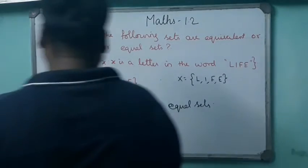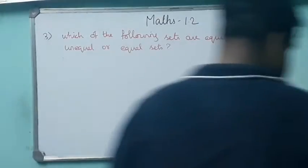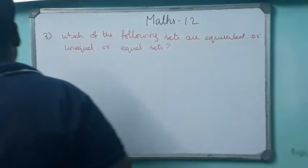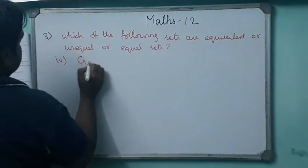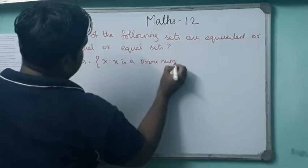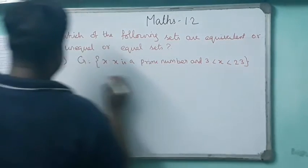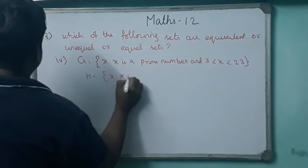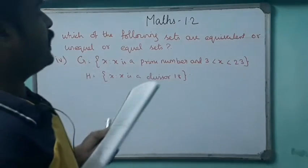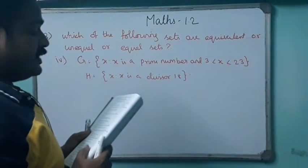Sum number four: set G equals {x such that x is a prime number and 3 less than x less than 23}, and set H equals {x such that x is a divisor of 18}.